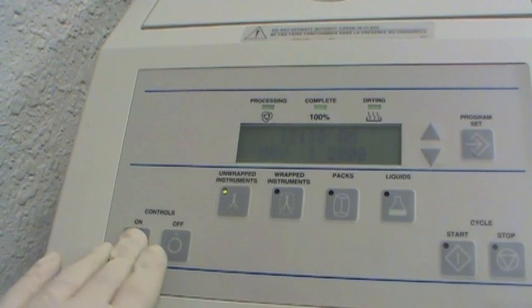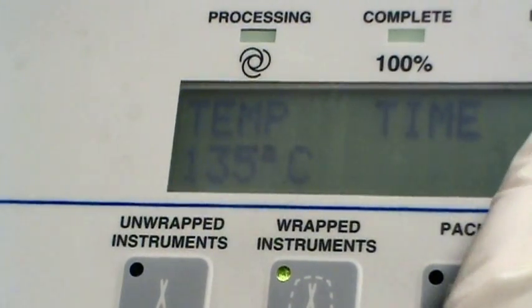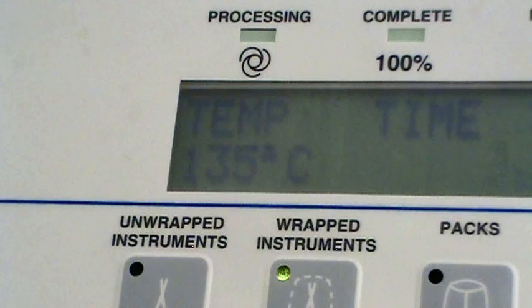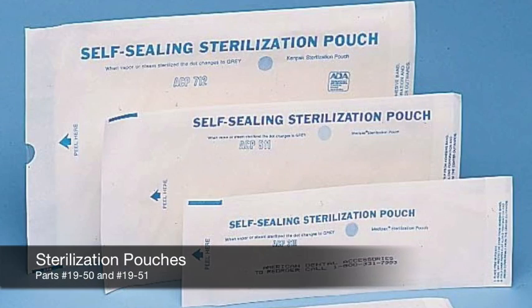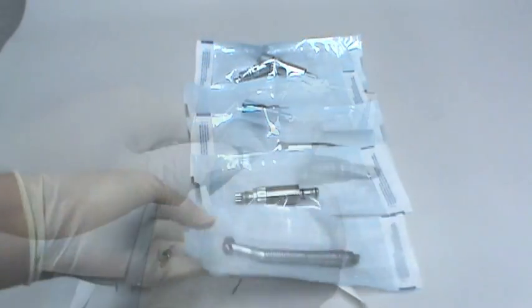When autoclaving or chemiclaving handpieces do not exceed temperatures of 275 degrees Fahrenheit or 135 degrees Celsius. Use autoclave bags with at least one paper side as they'll allow moisture to escape. Never use all plastic bags.